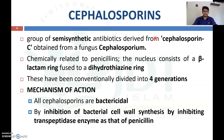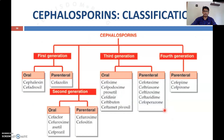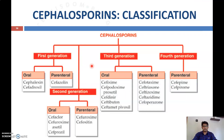All cephalosporins are bactericidal — they kill bacteria rather than merely inhibiting their growth. They inhibit bacterial cell wall synthesis by inhibiting the transpeptidase enzyme, similar to penicillin. Cephalosporins are classified into first, second, third, and fourth generations.